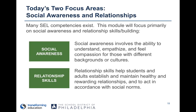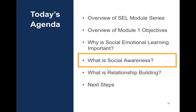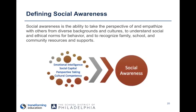Social awareness involves the ability to understand, empathize, and feel compassion for those with different backgrounds or cultures, for our peers. Relationship skills help students and adults establish and maintain healthy and rewarding relationships and to act in accordance with social norms. Social awareness specifically is the ability to take the perspective of and empathize with others from diverse backgrounds and cultures, to understand social and ethical norms for behavior, and to recognize family, school, and community resources and supports.